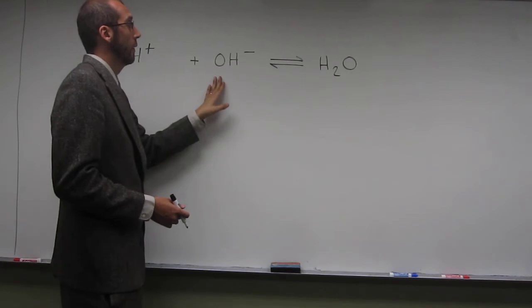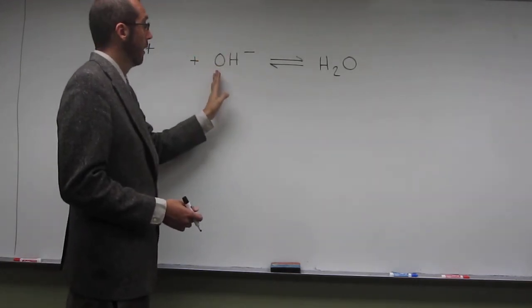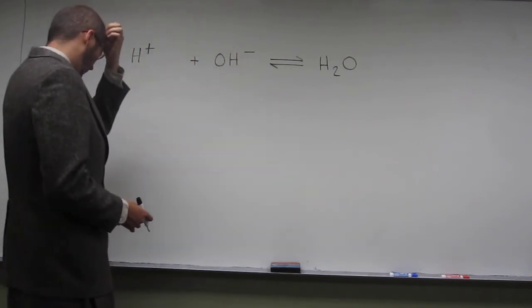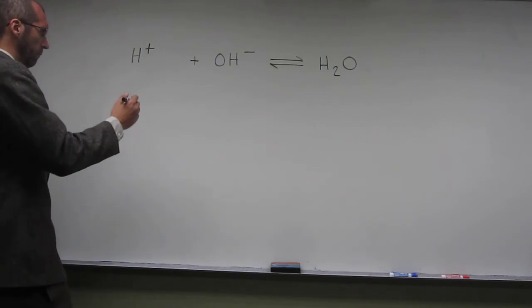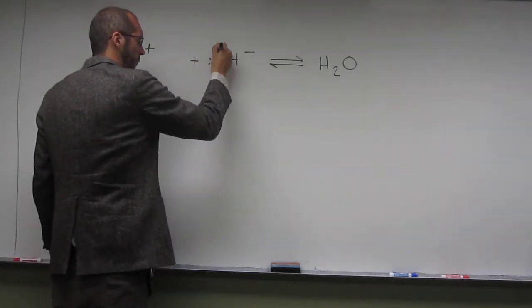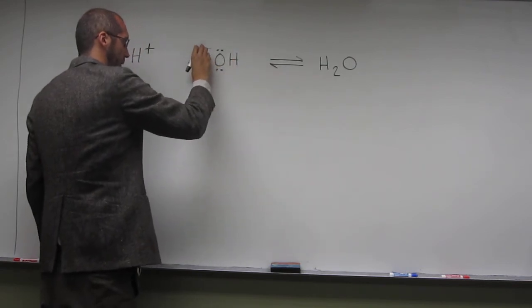This ion here, of course, has electrons around its oxygen. In fact, that negative charge is formally put on that oxygen. If you want to think about putting your electrons around it and putting the charge where it's supposed to be.